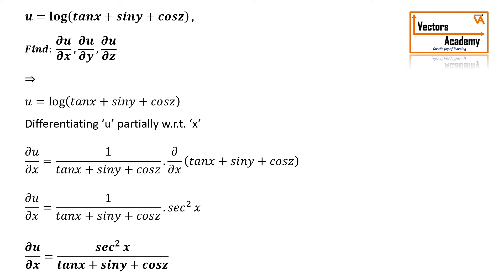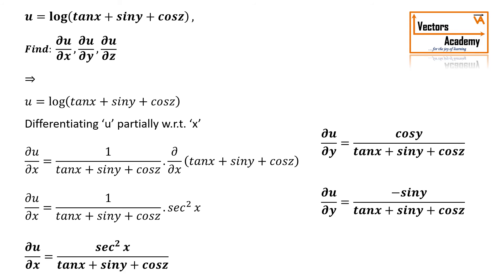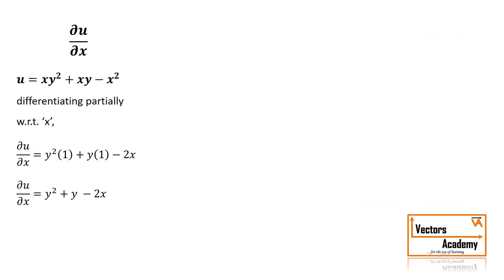In exactly the same way, you can find the partial derivative of u with respect to y and the partial derivative of u with respect to z. When finding del u/del y, the terms of x and z are taken as constant; when finding del u/del z, the terms of x and y are taken as constant. You can try these on your own and match the answers.